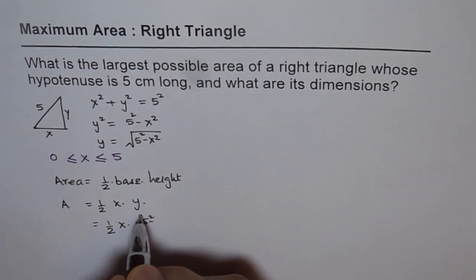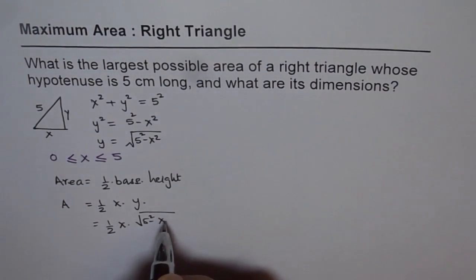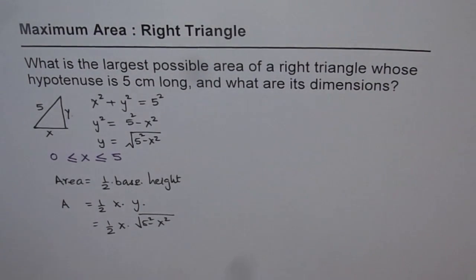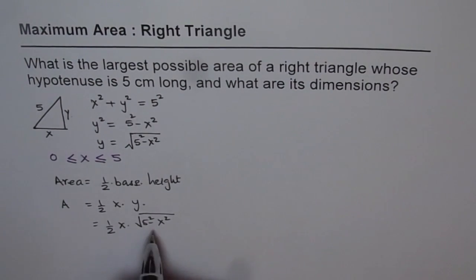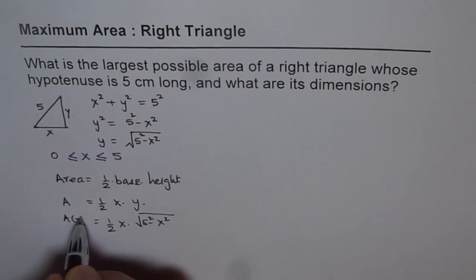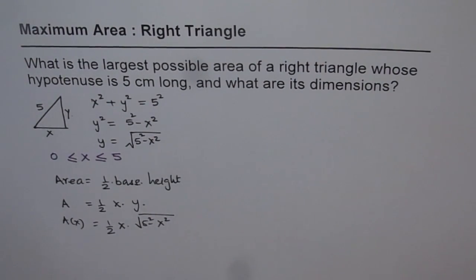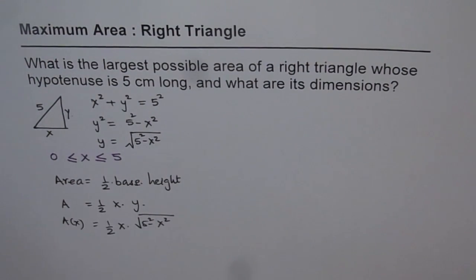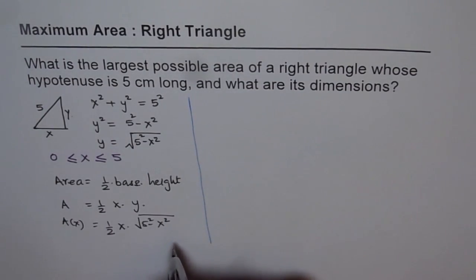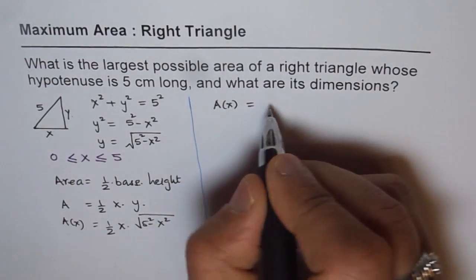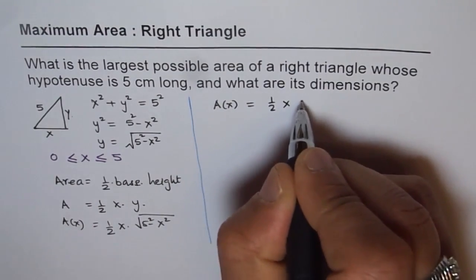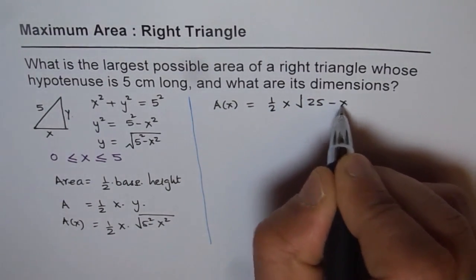We verify: a squared plus b squared equals c squared, so c squared is 5 squared which is 25. Now the area function is in terms of x: A(x) equals half x times the square root of 25 minus x squared. We have our function in one variable, so we can find its derivative with respect to x and then find the critical number.